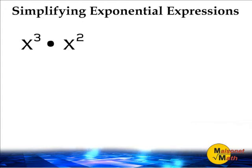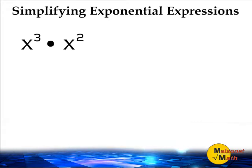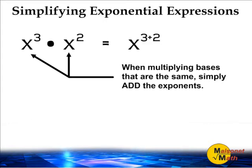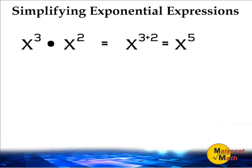In this example, we have an expression x to the third power times x to the second power. When multiplying bases that are the same, we simply add the exponents together. So in this case, this expression can be simplified to x to the fifth power.